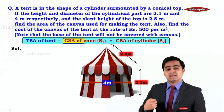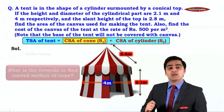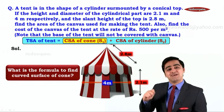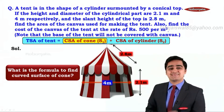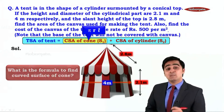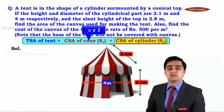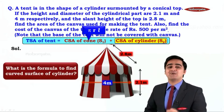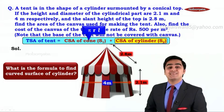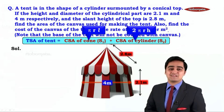Let us focus on the curved surface area of the cone. The formula to find the curved surface area of a cone is πrl. Now let us focus on the curved surface area of the cylinder. The formula to find the curved surface area of the cylinder is 2πrh.